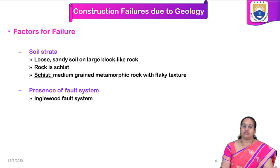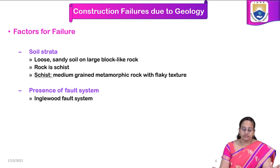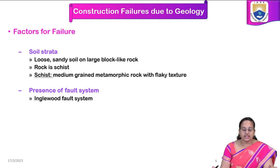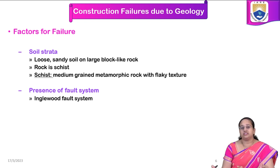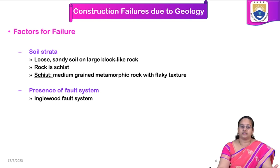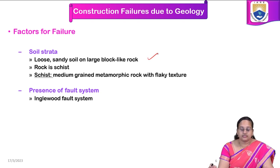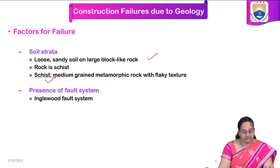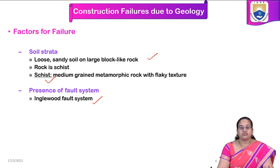Because of the sandy soil present above the rock, it is highly susceptible to saturation, which loosens the soil and can cause the dam to collapse. But it didn't happen suddenly — there was another feature adding to the geological factors: the active Inglewood fault system present very nearby, not more than a few meters away. This fault system is most active in the region, and movement of rock occurred because of it. So there are three parameters for failure: the presence of loose sandy soil, the presence of schist rock, and the fault system. This is the worst combination that caused the dam to fail.